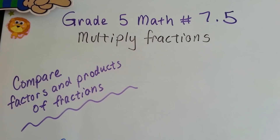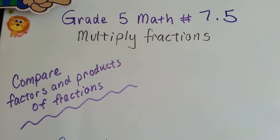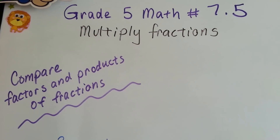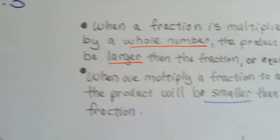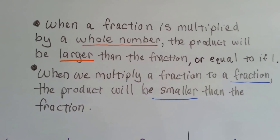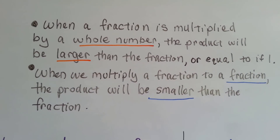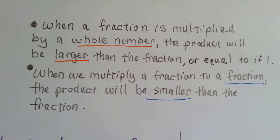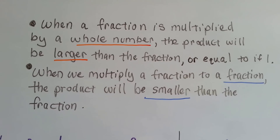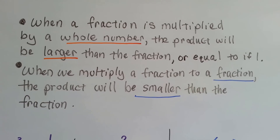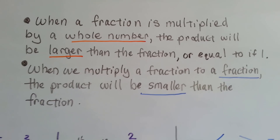Grade 5 math, number 7.5: compare factors and products of fractions. When a fraction is multiplied by a whole number, the product will be larger than the fraction, or equal to it if the whole number is 1. When we multiply a fraction by a fraction, the product will be smaller than that fraction. I'll show you how.